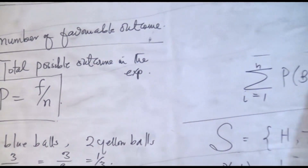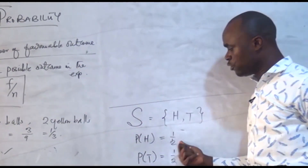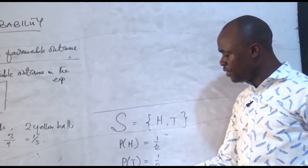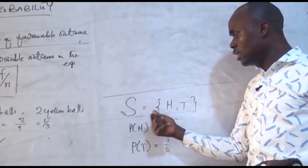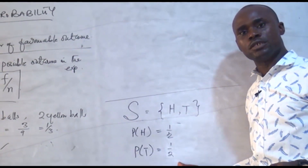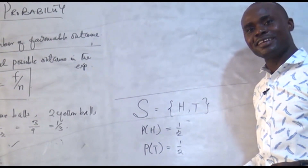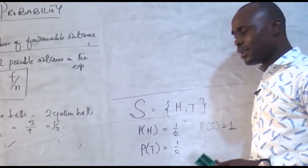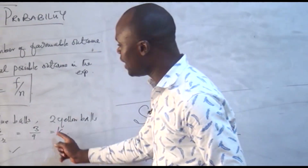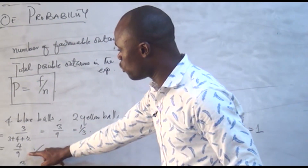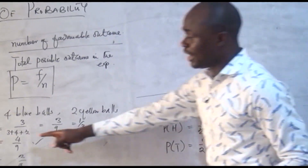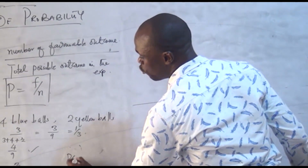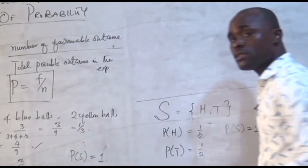So you can now understand why I wrote one over two for the coin toss. Having a head is one divided by the total, which is two. Having a tail is also one over two. And note that the probability of the sample space here is simply equal to one — if you add half plus half, it gives you one. Similarly, one over three plus four over nine plus two over nine also gives you one.